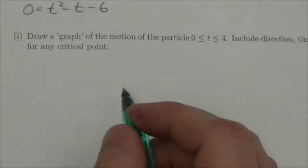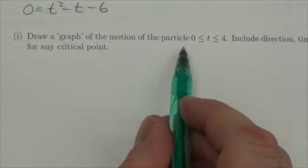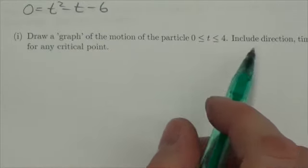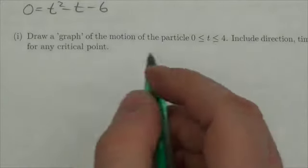Okay, hi everybody. This is the Math 31 applications review. This is question 1i. It says, draw a graph of the motion of the particle from 0 to 4 seconds. Include the direction, the time, the displacement for any critical point.